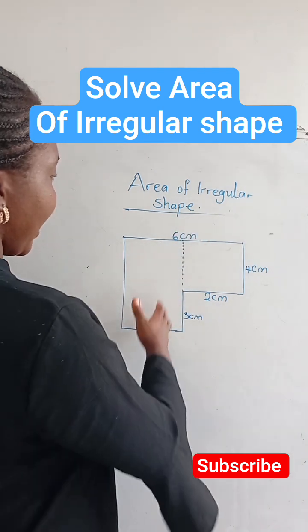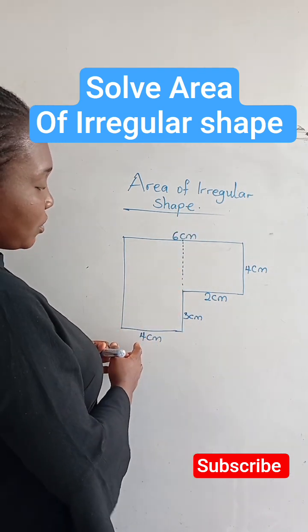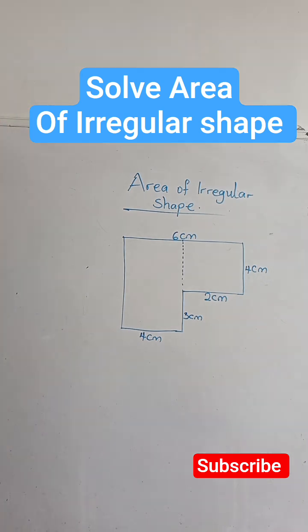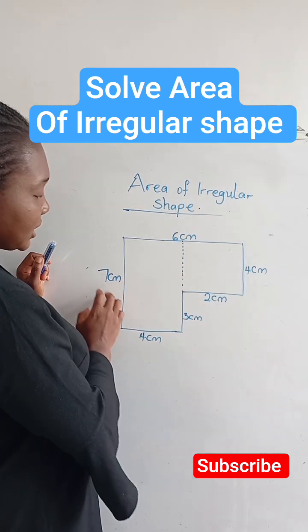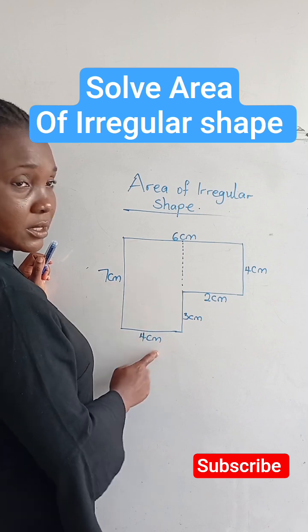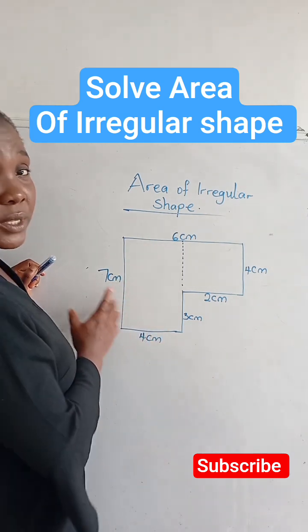And with this, we have a rectangle here and another rectangle. So this is actually the big shape.